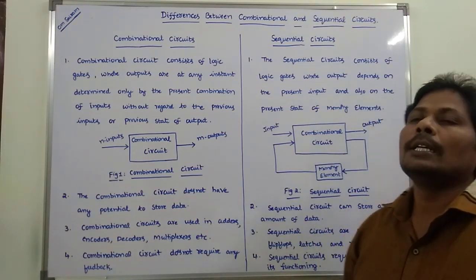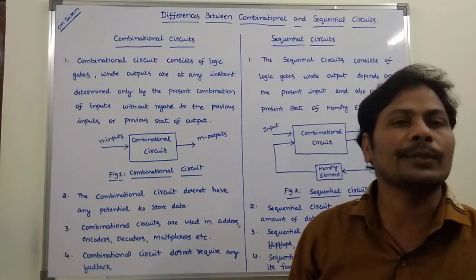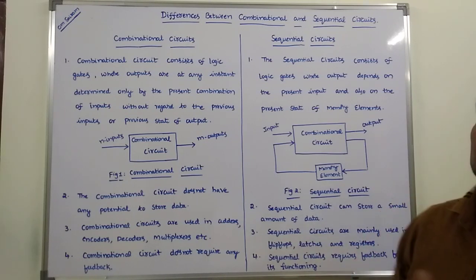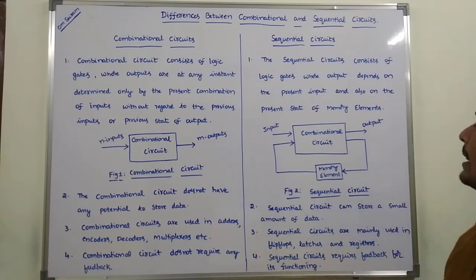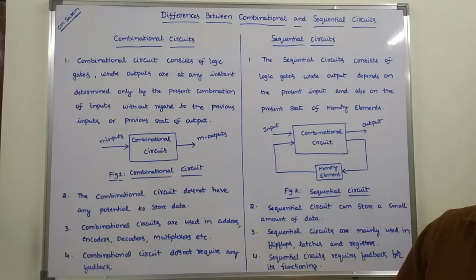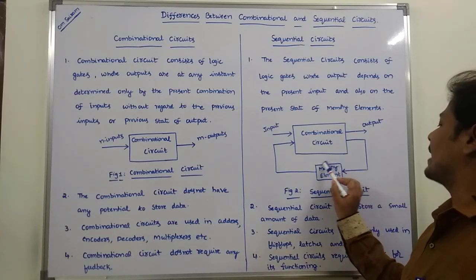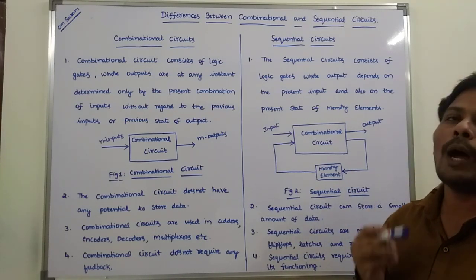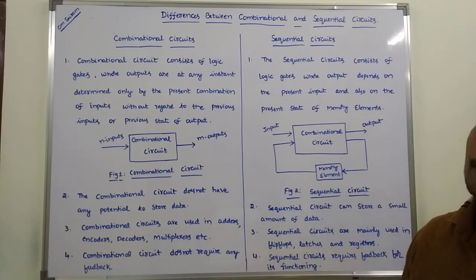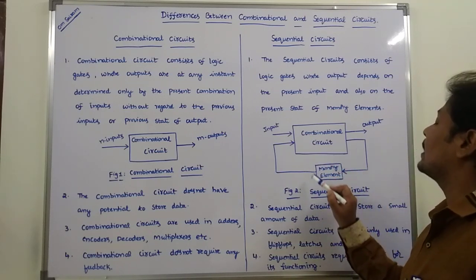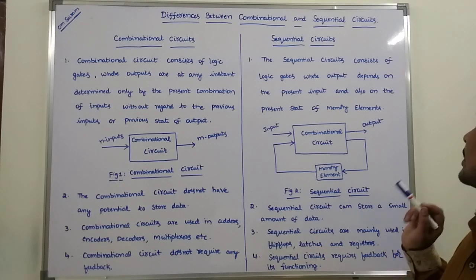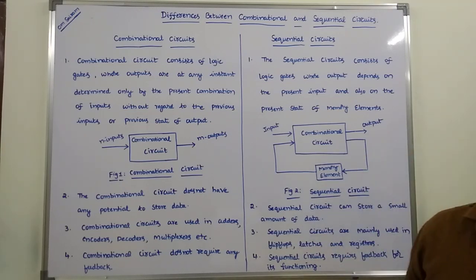But in the case of sequential circuit, it can store a small amount of data. This sequential circuit stores data in its memory element. What is stored is the present state of the memory element — that is, either a zero or a one value. That present state is stored via the feedback, and because of that reason, sequential circuits can store a small amount of data.